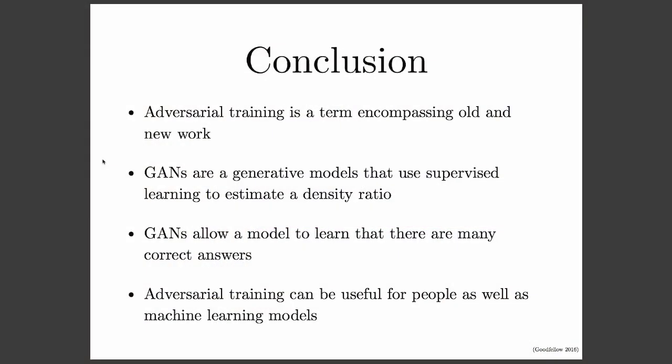In conclusion, adversarial training is a way of training a variety of models in different ways that all involve working on a worst-case input. Generative adversarial nets are one of the most popular members of this framework, and they're based on using the estimate of a ratio of densities to do unsupervised learning. Part of why they work so well is that they allow the model to have multiple correct answers, and they draw on a lot of the ideas that help humans to learn really well. I'm almost out of time, but I think we might be able to have a few questions.